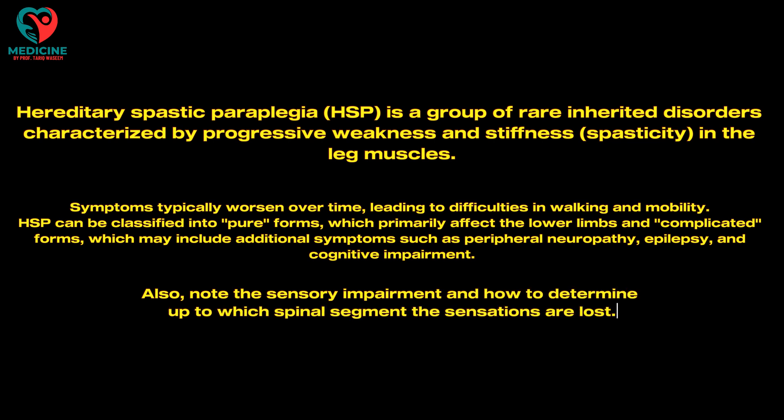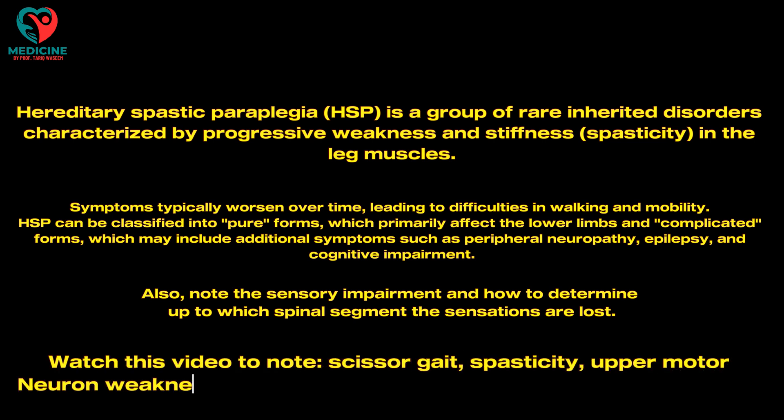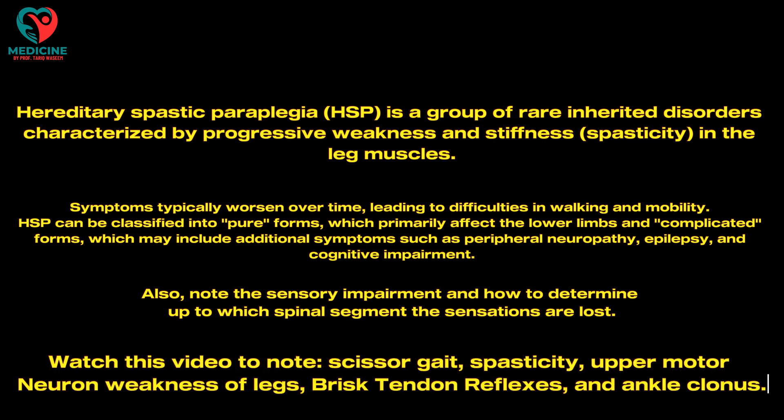Note the sensory impairment and how to determine up to which spinal segment the sensations are lost. Watch this video to note scissor gait, spasticity, upper motor neuron weakness of the legs, brisk tendon reflexes, and ankle clonus.